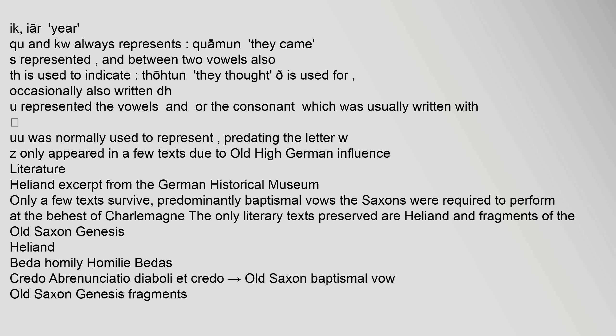The letters 'ich,' 'ire,' 'year,' qu, and kw always represent the sound /kw/, as in 'quamen' (they came). The letter S represented /s/, and between two vowels also /z/. TH is used to indicate /θ/, as in 'thōtun' (they thought). The character Ƿ (wynn) represented the vowels and/or the consonant /w/, usually written with UU. The letter Z only appeared in a few texts due to Old High German influence.